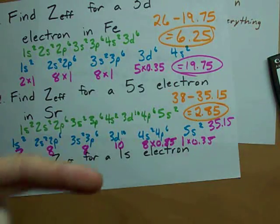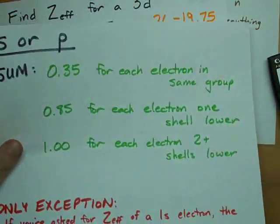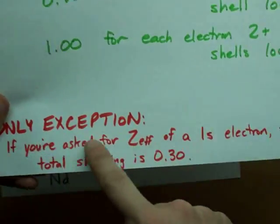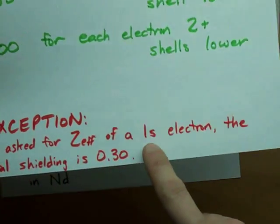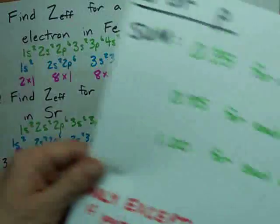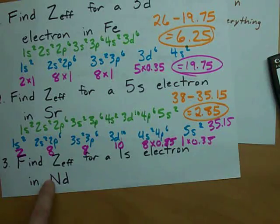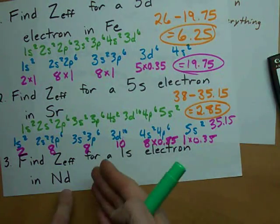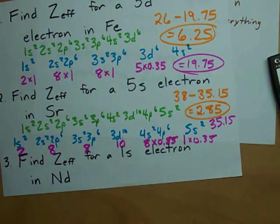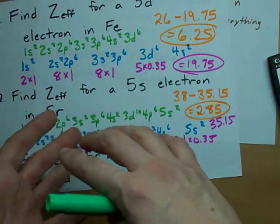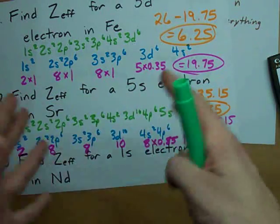Now the only exception ever to these rules that I've proposed to you is if you're asked for the effective nuclear charge of a 1s electron, the total shielding is just 0.3. Here's what I mean. If you want the effective nuclear charge for a 1s electron in neodymium, it doesn't matter what this is. It could have been americium or californium, whatever.